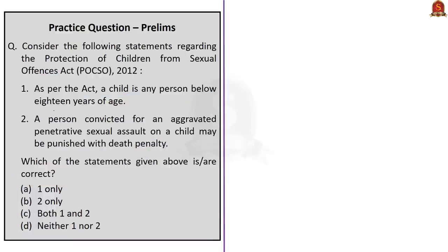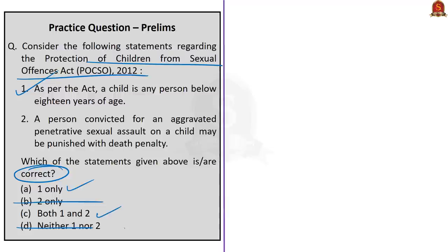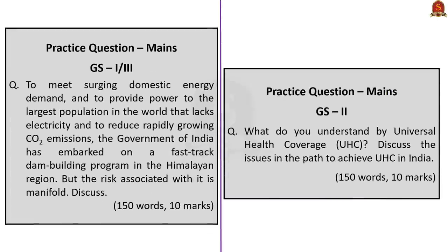The next question is about POCSO 2012. Two statements are given and we are asked which are correct. Statement 1 says as per the act, a child is any person below 18 years of age — this is correct. Statement 2 says a person convicted for aggravated penetrative sexual assault on a child may be punished with death penalty — this is also correct. Therefore, the correct answer is Option C, both one and two. You can write answers for the mains questions and post in the comment section.